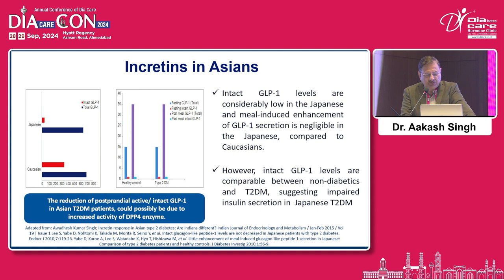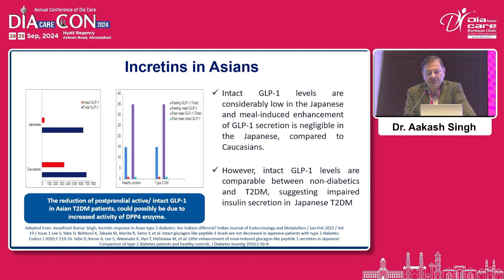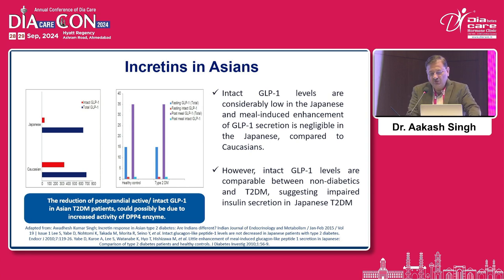Coming to the pathophysiology, in Asian populations, it has been seen that intact GLP-1 levels are considerably low, and meal-induced enhancement of GLP-1 secretion is negligible in Japanese compared to Caucasians. However, intact GLP-1 levels are comparable between non-diabetics and type 2 diabetics, which suggests that we have inherently low GLP-1 levels. This was a study from Dr. A.K. Singh.